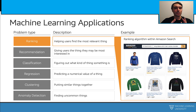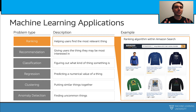Before we dive into building our machine learning models, let's see some real-world applications. Let's start with ranking. With ranking, we help users find the most relevant thing. For example, when I go to the Amazon website and search for shirts with Cookie Monster, the ranking algorithm is going to return the most relevant things.